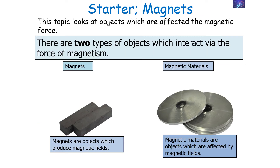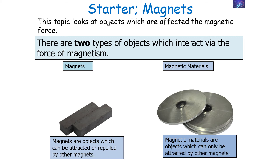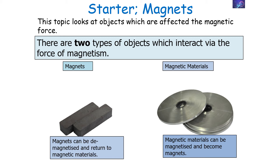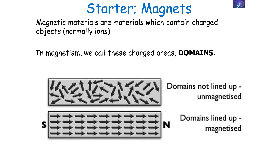There are two types of objects which interact via the force of magnetism: magnets, which are objects that produce their own magnetic fields, and magnetic materials, which are objects affected by the magnetic field but do not produce their own. Magnets can be attracted or repelled by other magnets, whilst magnetic materials can only be attracted by magnets. Magnets can be demagnetized and return to being magnetic materials, whilst magnetic materials can become magnetized and turn into a magnet.